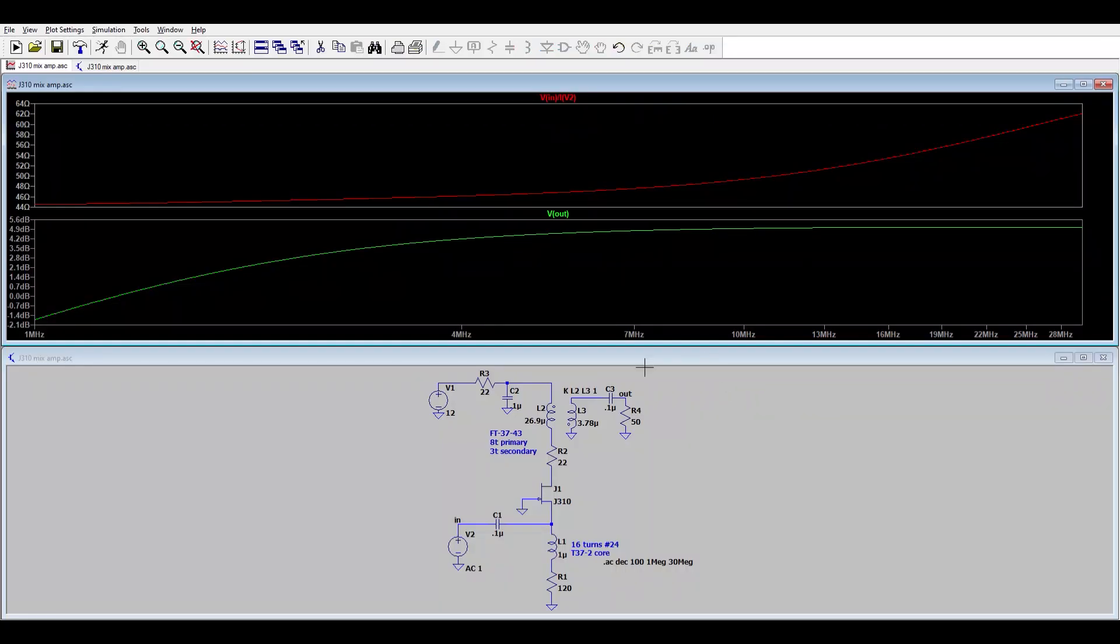Here's a simple LT-SPICE simulation of that amplifier. I'm showing two plots here. The topmost plot shows how the input impedance varies over a frequency spread from 1 MHz to 30 MHz. Notice that it doesn't vary more than about plus or minus 10 ohms from a nominal 50 ohms. And also notice the gain. It stays pretty flat at around 5 dB, especially from around 4 MHz and up.